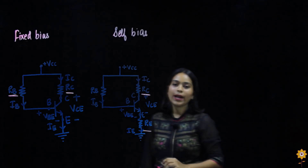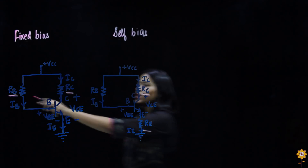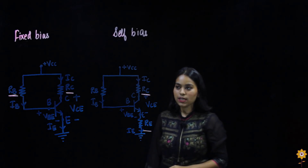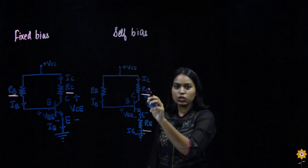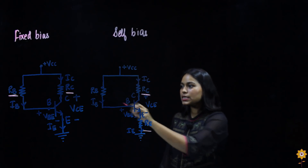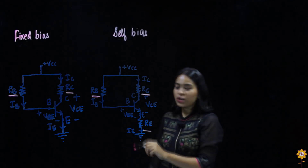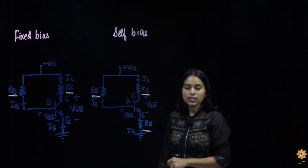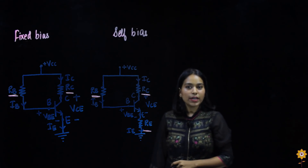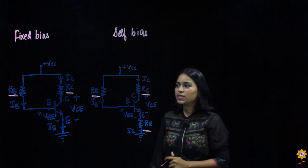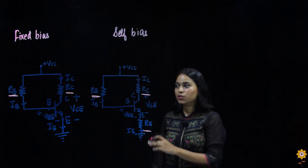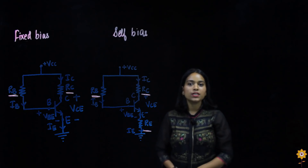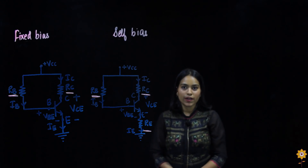Fixed bias is also called base bias, so one resistor is present in the base terminal. We had a total of two resistors in fixed bias, whereas in self bias RC was present plus resistor RB in the base terminal. An extra resistor RE in the emitter terminal is present in self bias, which is also called emitter bias configuration. Now we will see voltage divider bias and the difference in its circuit diagram.